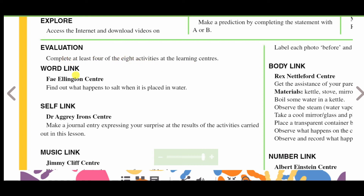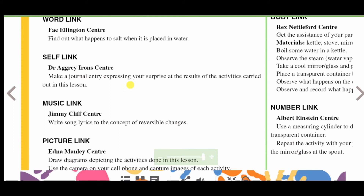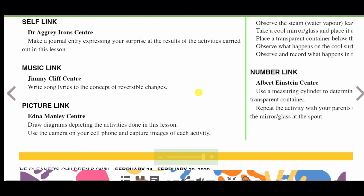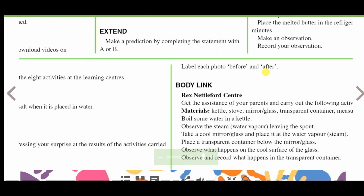Evaluation — complete at least four of the eight activities at the learning centers. Word link, Fellington Center: find out what happens to salt when it is placed in water. Self link: make a journal entry expressing your surprise at the results of the activities in this lesson. Music link, Jimmy Cliff Center: write song lyrics based on the concept of reversible changes. Picture link, Edna Manley Center: draw diagrams depicting the activities done in this lesson, use your cell phone camera to capture images of each activity, and label each photo before and after.